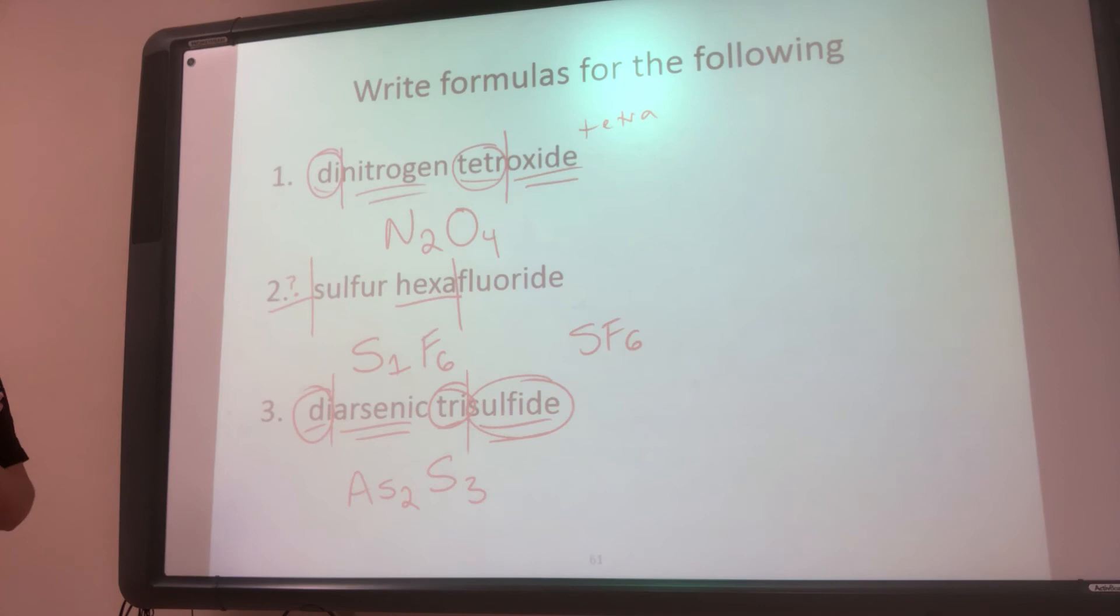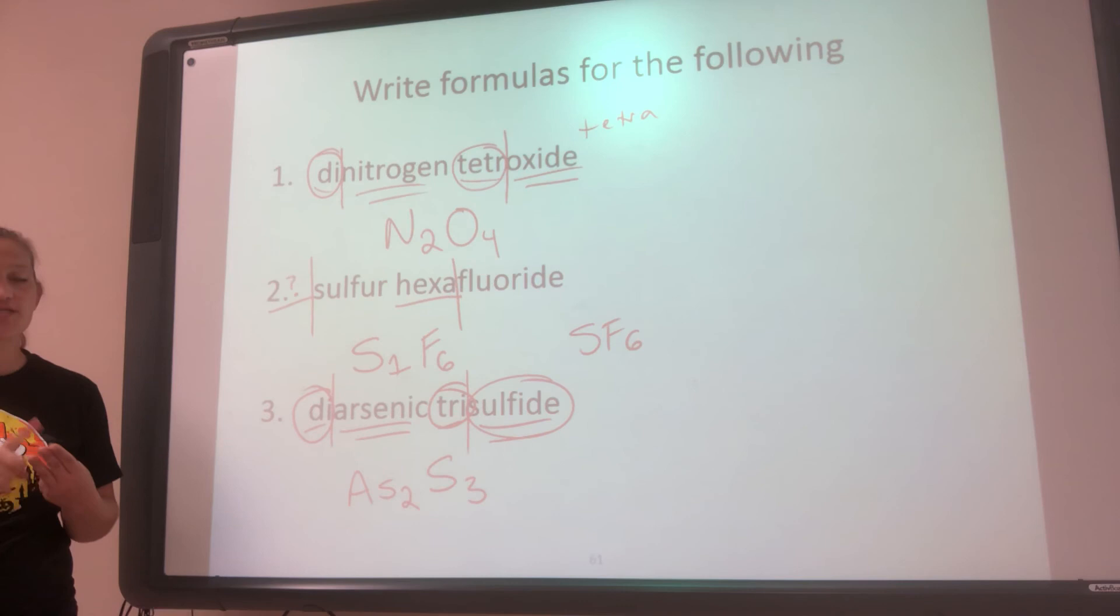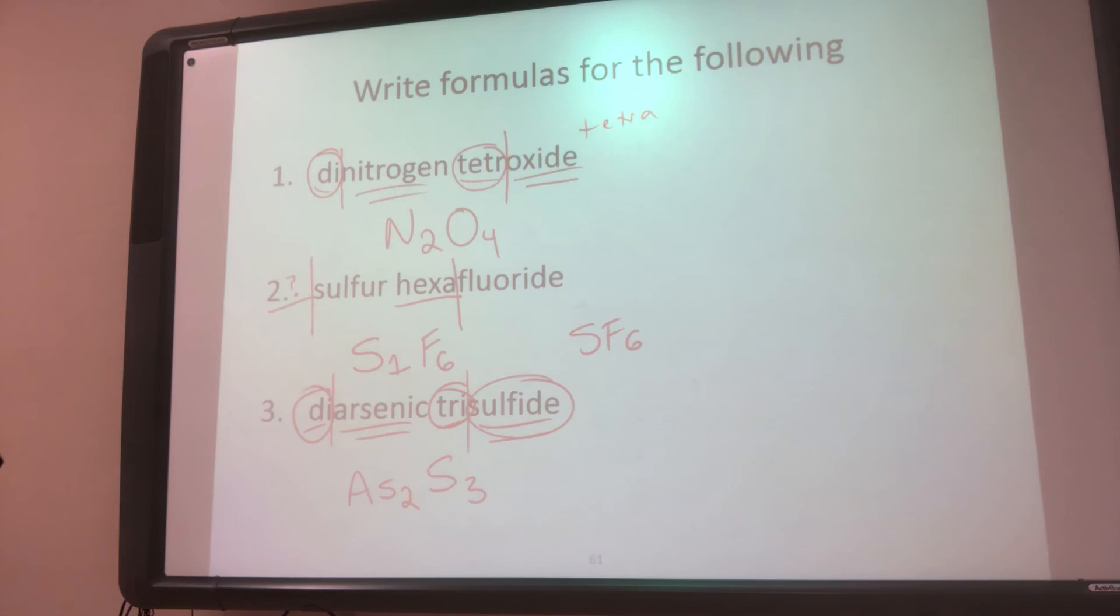So diarsenic trisulfide. All right, so that is the end of our naming section. So we have learned how to name ionic compounds, covalent, molecular compounds, and then all those subgroups of ionic. Okay, so now I can give you anything to name, and you should be able to name it if it's ionic, covalent, or a hydrate. The only thing we haven't talked about how to name that you'll learn next semester is acids and bases. Okay, so that's the only thing we have left to learn. Then this chapter, you should be able to name pretty much anything, unless it's acids or bases or some really special organic compounds. But all the general chemistry stuff, you should be able to name.